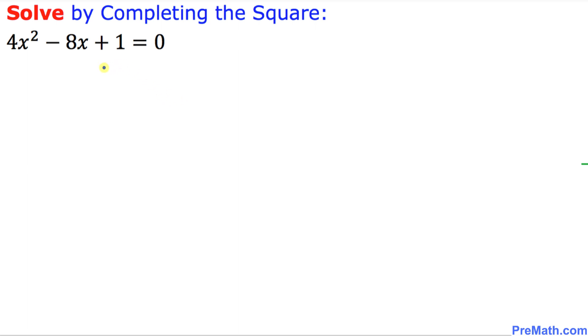The very first thing, we want to make sure that only x variables must be on the left-hand side. That means this constant, positive one, must go on the other side. So we simply got 4x square minus 8x and this positive one simply becomes negative 1.